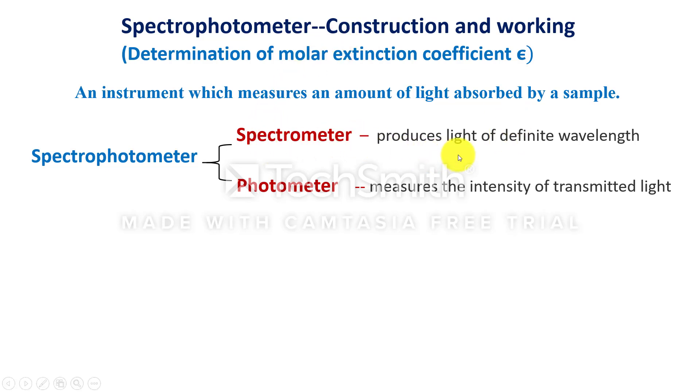Spectrometer produces light of required wavelength. Photometer measures the intensity of transmitted light.